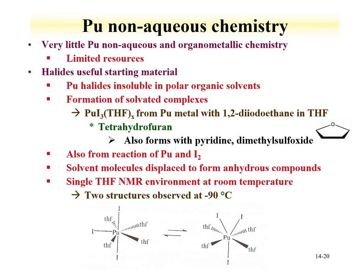We'll end the lecture on plutonium chemistry with a discussion of non-aqueous and organometallic chemistry. There is relatively very little plutonium organometallic chemistry reported. Halides are useful starting compounds; plutonium triiodide tetrahydrofuran (PuI₃·THF) is a particularly useful starting compound that can be reacted with a number of compounds to form novel organometallic species. These species can be examined to understand the electronic structure of plutonium compounds, and exploring the spectroscopy of resulting compounds is a key area of interest.